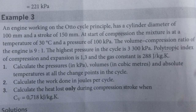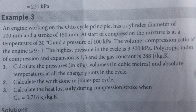An engine working on the AutoCycle principle has a cylinder diameter of 100 millimeters and a stroke of 150 millimeters. At start of compression, the mixture is at a temperature of 30 degrees Celsius and a pressure of 100 kilopascal. The volume compression ratio is 9 to 1, the highest pressure in the cycle is 3300 kilopascal, the polytropic index of compression and expansion is 1.3, and the gas constant is 288 joules per kg Kelvin.